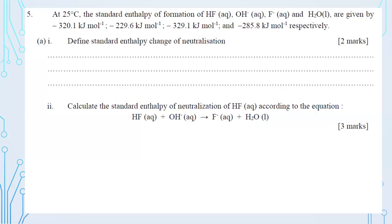In our previous lesson we stopped at number four, so we are going to continue with number five. Number five: at 25°C, the standard enthalpy change of formation of HF, OH⁻, F⁻, and liquid water are given as −320.1, −229.6, −329.1, and −285.8 kJ/mol respectively.